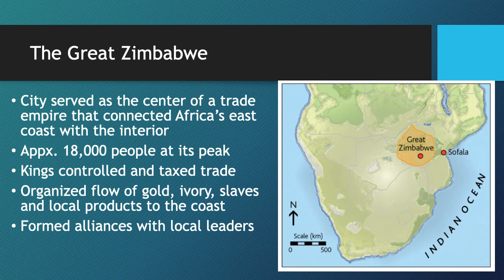The Great Zimbabwe organized the flow of gold from the interior of Africa, as well as ivory from elephant and rhinoceros tusks, slaves, and other local products being transported. Slavery was already happening, but not at the level it would reach later during the transatlantic slave trade. Slaves were being traded to islands in the Mediterranean and to the Arab world, as well as within Africa.